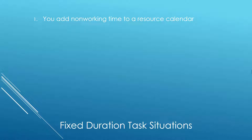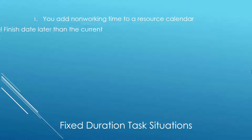One: you add non-working time to a resource calendar for a resource that is assigned to a fixed duration task. Two: you enter an actual finish date that is later than the current finish date of a fixed duration task.